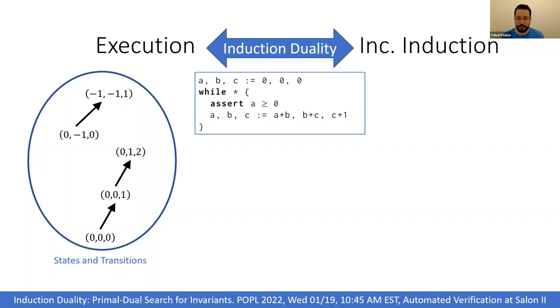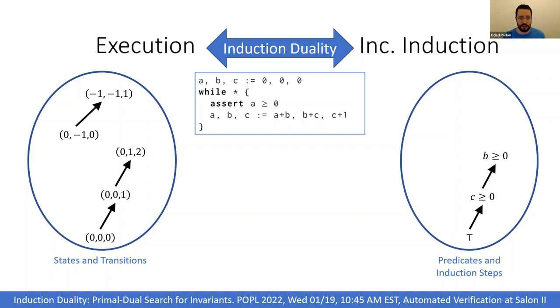We usually think of induction as a monolithic process, but we can also think of it as an incremental process that progresses in a stepwise manner. For example, for this program we can start from the predicate true, which is certainly an invariant, and then use induction to prove that C ≥ 0 is an invariant of the program. Then using the fact that C is non-negative, we can prove that B is non-negative with another induction step, and with another induction step we can prove that A is non-negative.